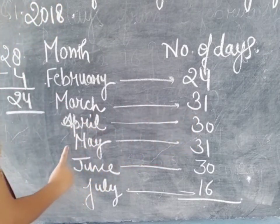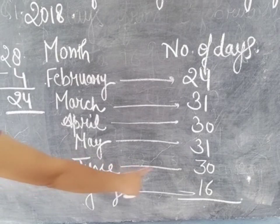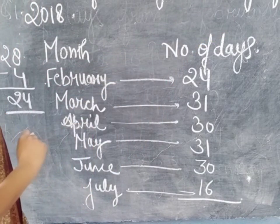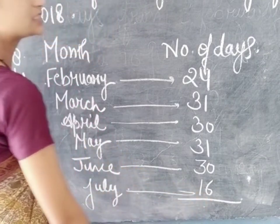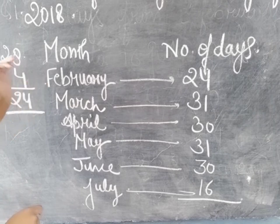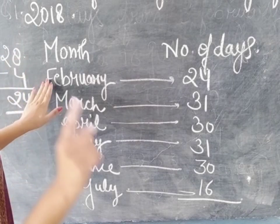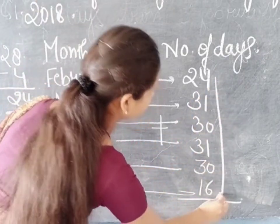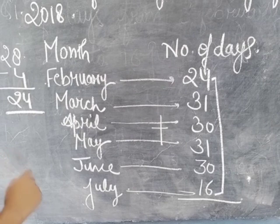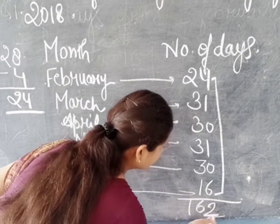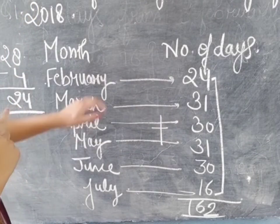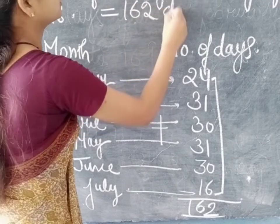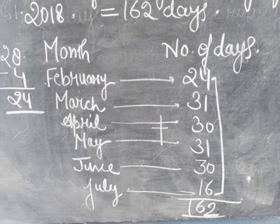March is a complete month: 31. April is a complete month: 30. May is a complete month: 31. June is a complete month: 30. And the final date is 16 July, so you have to write up to 16 July. Do not get confused about the starting and final dates. Now you have to add these numbers from 24 to 16, and when you add these you will get the answer 162. So there are 162 days from 5 February to 16 July 2018.